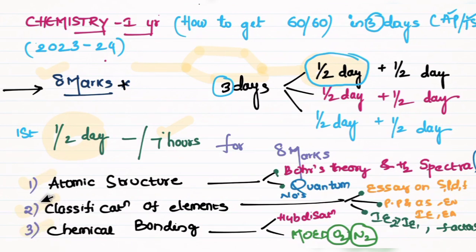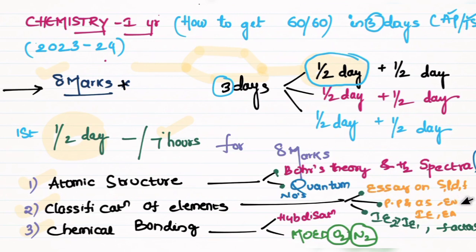If we complete organic chemistry first — atomic structure including Bohr's theory, hydrogen spectra, quantum numbers — then classification of elements, SPDF, periodic properties, factors affecting IE1, IE2 greater than IE1, hybridization, MO theory for oxygen and nitrogen — we can cover the important chapters.